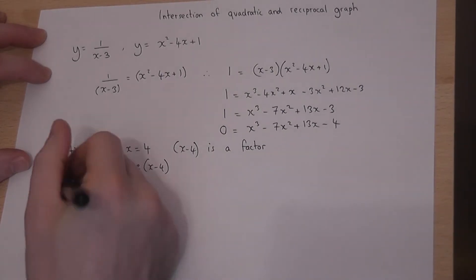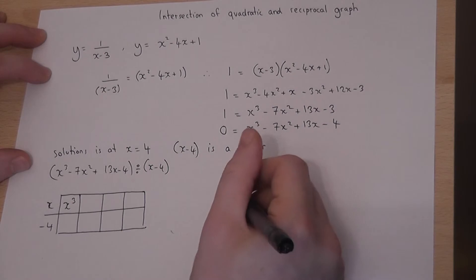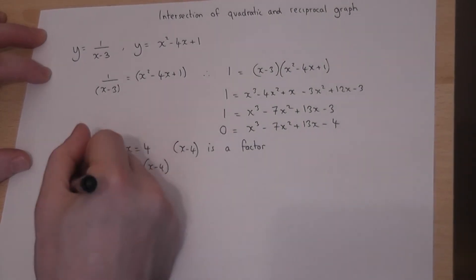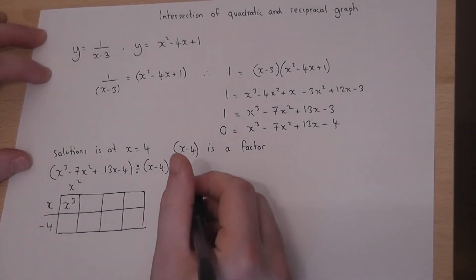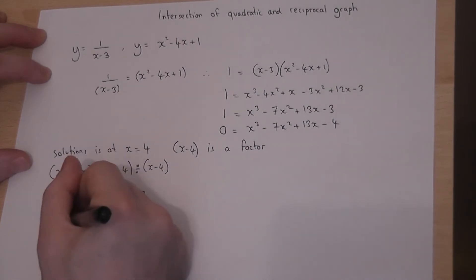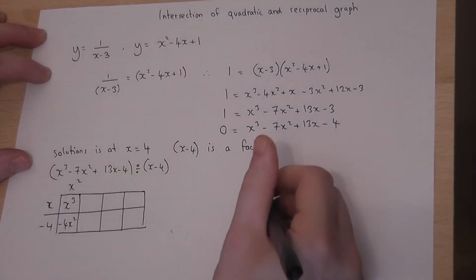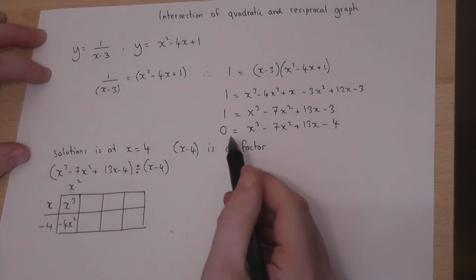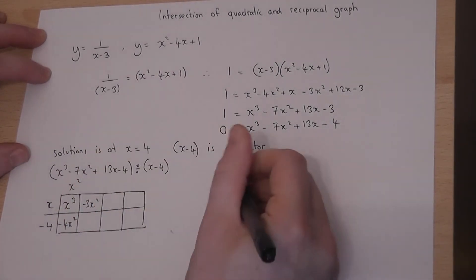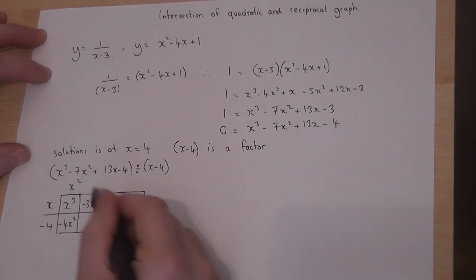OK, I want an x³. So therefore, x times what is x³? Well, x times x². And minus 4 times x² is minus 4x². But I want a minus 7x², so we need another minus 3x² up there. These two terms combine to give minus 7x². I've already got an x, so we need a minus 3x.